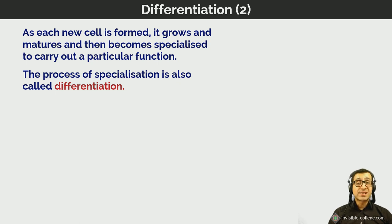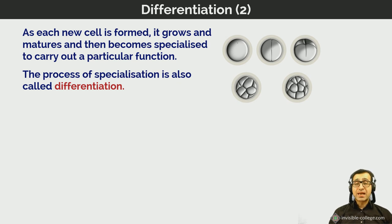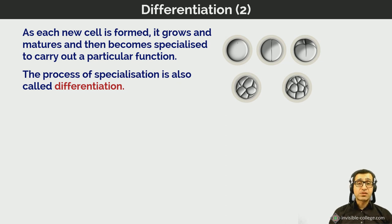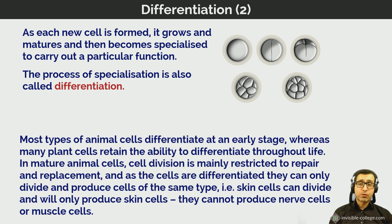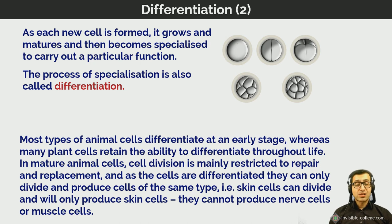Most animal cells differentiate at an early stage of development during fetal growth, whereas plant cells retain the ability to differentiate throughout their lives. In mature animals, cell division is mainly restricted to replacement of dead cells, repair of damaged tissues, and growth. Once cells are differentiated, they can only divide and produce cells of the same type — skin cells can only produce new skin cells by mitosis, never cells of a different tissue type such as nerve cells.